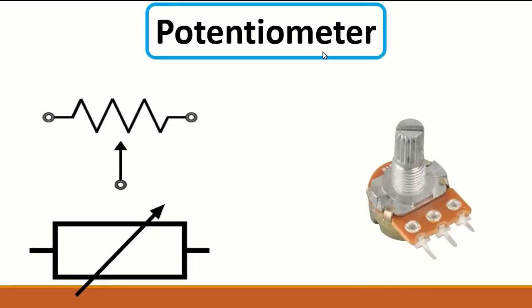Here we have the potentiometer — it is just a variable resistance. In the schematic, you can find a normal resistor symbol with an arrow meaning variable, or a resistor with an arrow that can be moved along its length. This is basically a variable resistor or potentiometer, and we usually find this kind of resistor in radios.